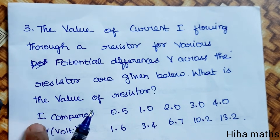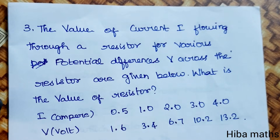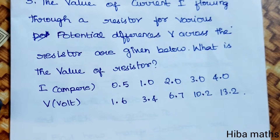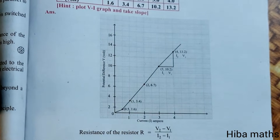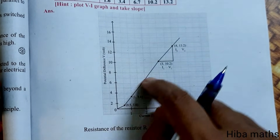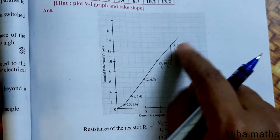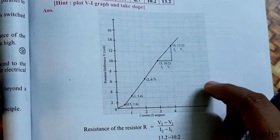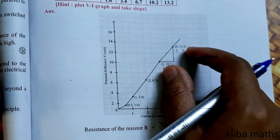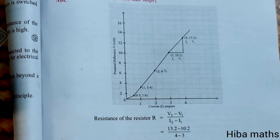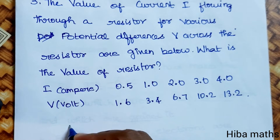We will plot the current and voltage values from the table on a graph. Using the graph, we will work out the resistance from the slope of the V-I graph.